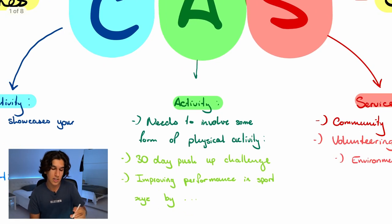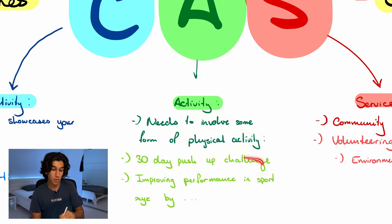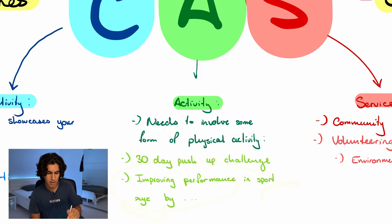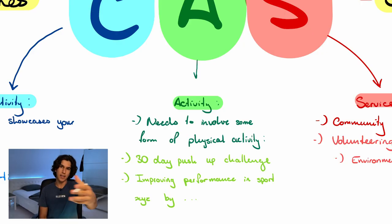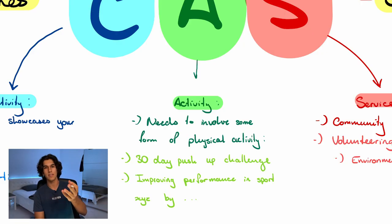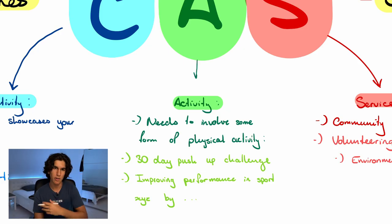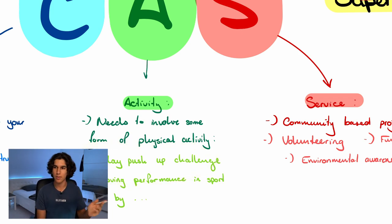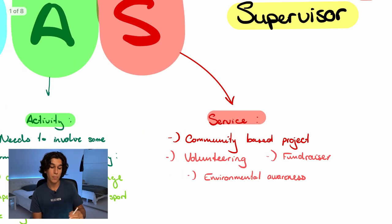The second part is Activity, which needs to be some form of physical activity — like a 30-day push-up challenge or improving performance in a sport. Think of the viral fitness content on YouTube — body transformations, pull-up challenges. It doesn't need to be that extreme; it can be coaching, going to the gym, or just doing something physical.